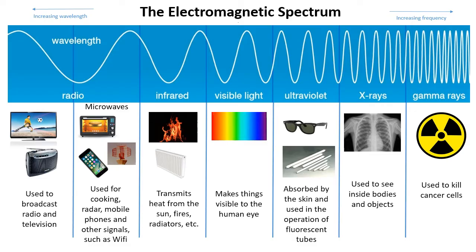Radio waves are a type of electromagnetic radiation. The diagram shows the different types of electromagnetic radiation and its uses as the frequency increases and the corresponding wavelength reduces. As the frequency increases, electromagnetic waves have different properties and uses as indicated. In this video we will be talking about radio waves used for broadcast radio and television, where the wavelength is typically between 30 centimetres and 1500 metres long.